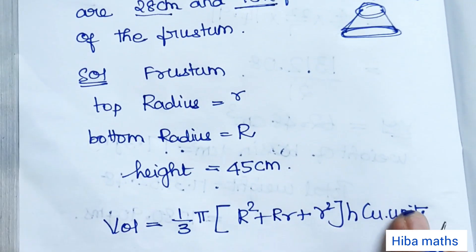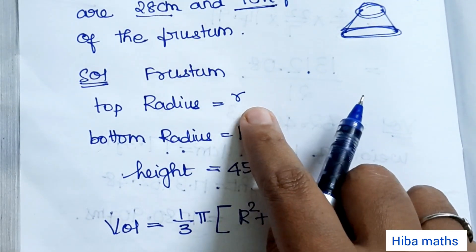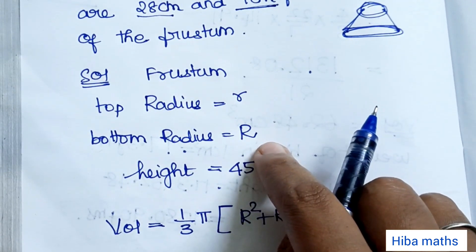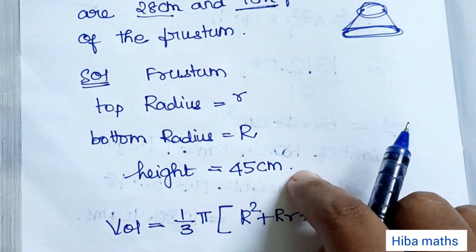In the solution, frustum top radius is small r, bottom radius is capital R, and the height is 45 cm.